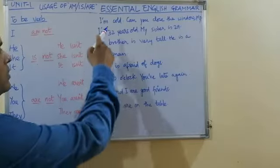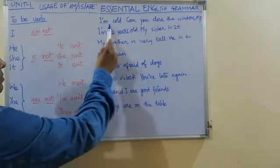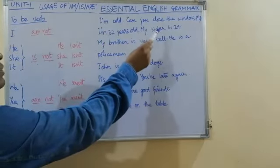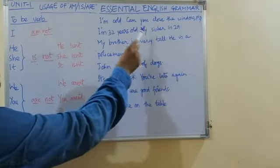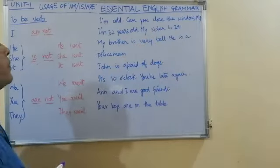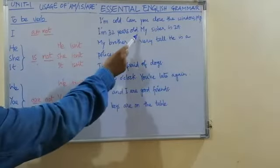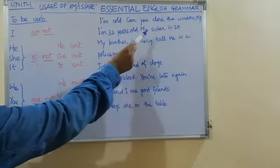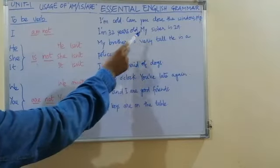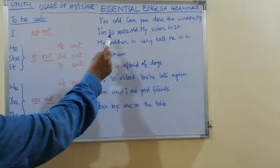Let's have a few examples. I am cold — mujhe thand lag rahi hai. Can you close the window please? Kya aap khidki band kar sakte hain? I am 32 years old. My sister is 29. Main batis saal ka hun, meri behen unatis saal ki hai.